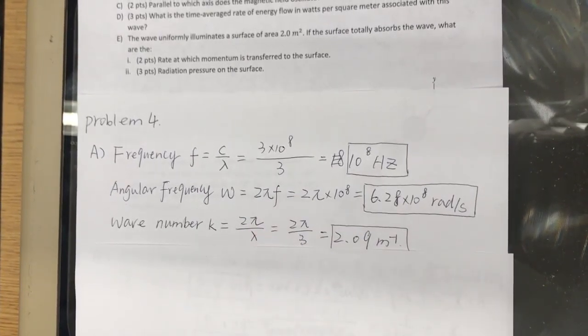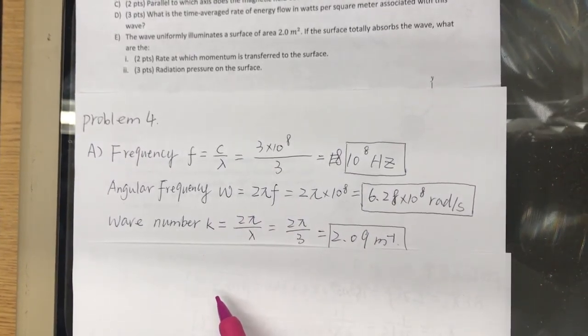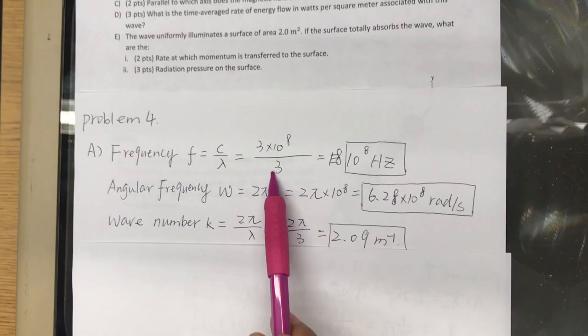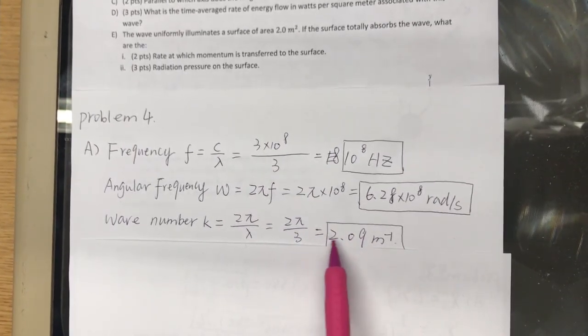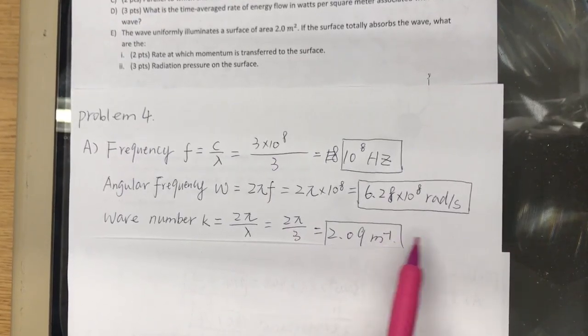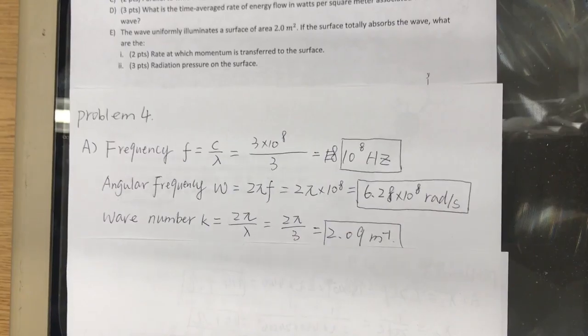Wave number, again, classic case of plug-and-chug. K equals 2 pi over wavelength. We have the wavelength, that's a given. 2 pi divided by 3 equals 2.09, sorry, 2.09 meters, divided by meters, per meter.